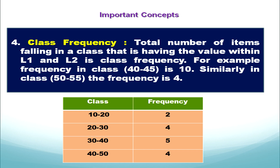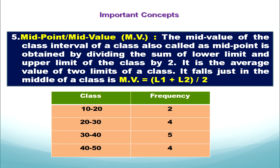For example, for 10 to 20 the frequency is 2, and for 20 to 30 the frequency is 4. The next concept is midpoint, often known as midvalue. The midvalue of the class interval is also called the midpoint.